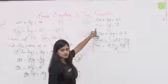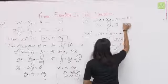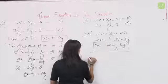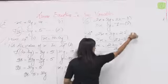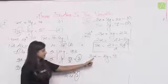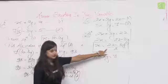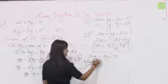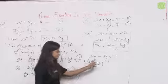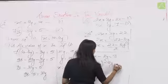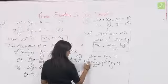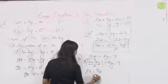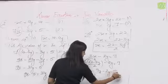अब यह x की value second equation में put करते हैं: 3·[(22 − 3y)/2] − 2y = 7। इसे open करने पर: (66 − 9y)/2 − 2y = 7। यह fraction में value आई। LCM 2 लेंगे।